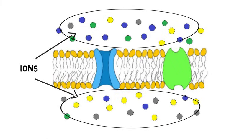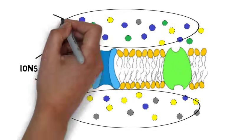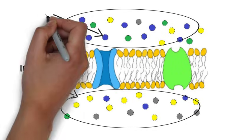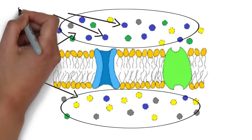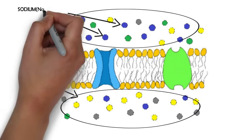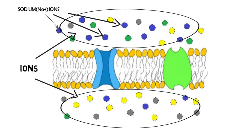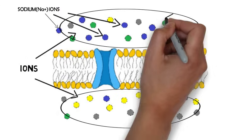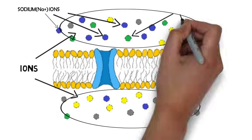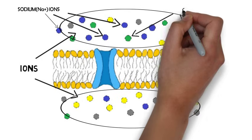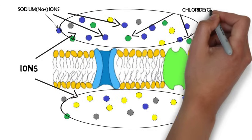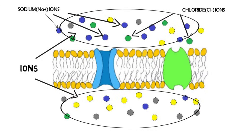There are several ions that play an important role in the membrane potential of neurons. There are positively charged sodium ions, represented by these blue circles, and negatively charged chloride ions, represented by these green circles. When a neuron is at rest, the sodium ions and chloride ions are more prevalent outside of the cell.